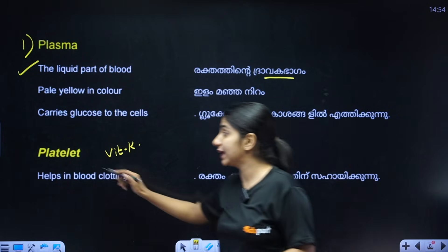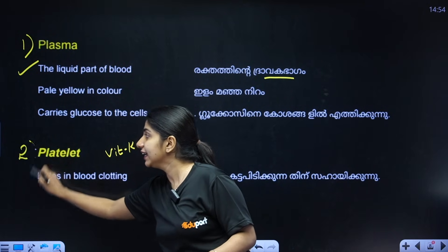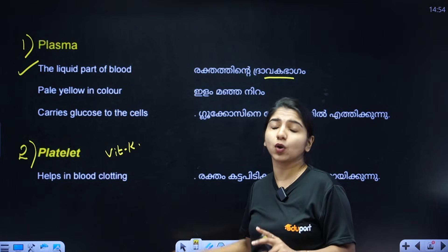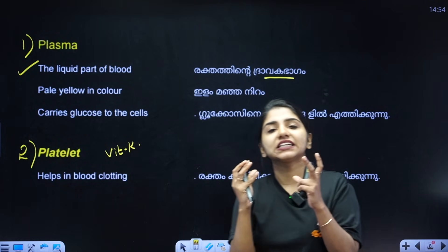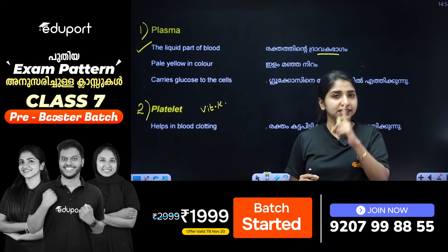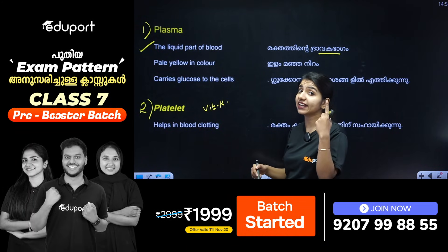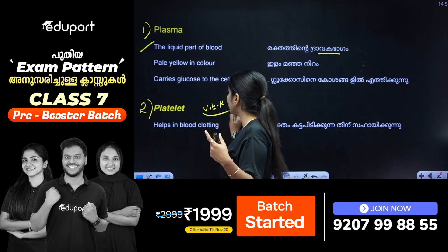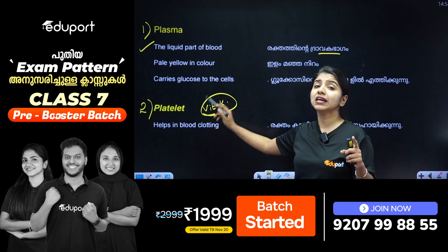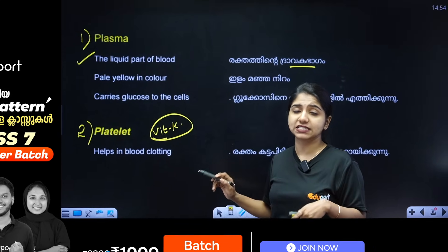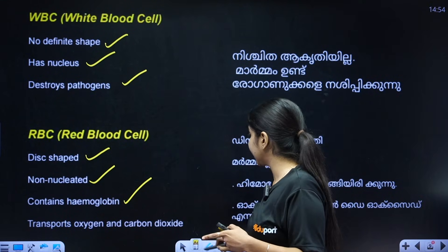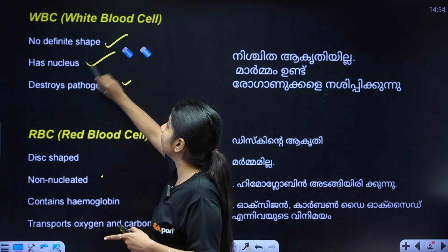Platelets help in blood clotting, which helps to stop bleeding. You can use vitamin K to help with blood clotting.